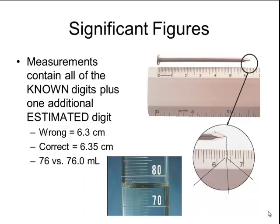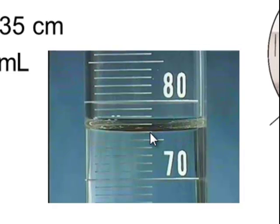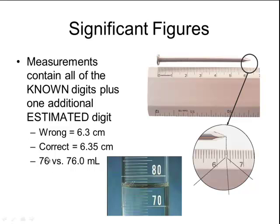Reconsidering the graduated cylinder, when looking at the measurement it may appear to be exactly 76, so one might write 76. But technically, if the measurement is written as 76, the first digit is the known digit and the last digit is the estimated digit — advertising that you know it's at least 70 and guessing it's between 70 and 80. What you're actually able to read is that you know for certain it is 76, and you're estimating it's exactly 76.0. That's why it's necessary to write .0, because another student might read 76.1, but you read 76.0 — and so the .0 is your estimated digit.